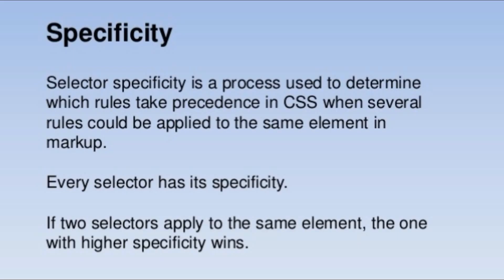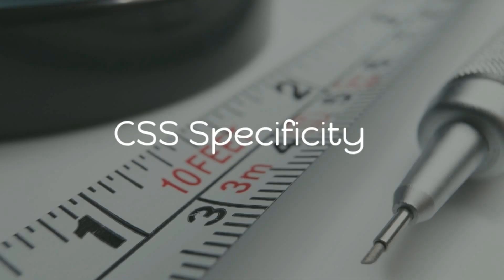Let's understand what CSS specificity is. CSS specificity is the means by which the browser decides which CSS property values are the most relevant to an element and therefore will be applied. Specificity is based on matching rules which are composed of different sorts of CSS selectors. CSS specificity tells you the answer to a common question: who would win in a fight of CSS rules?